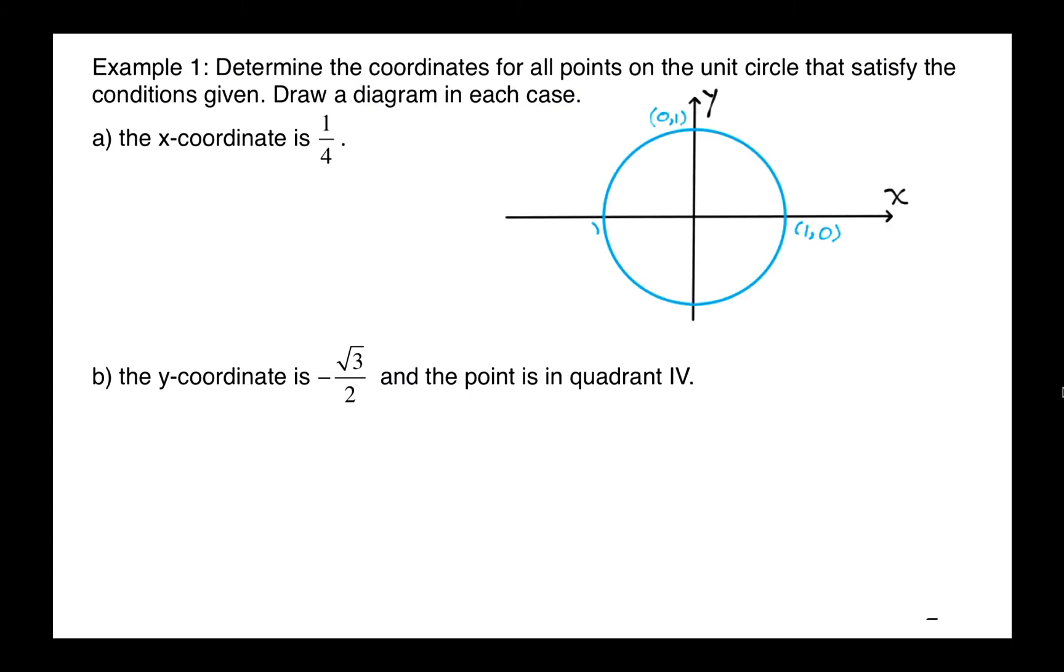If the x coordinate is a quarter, you can either have a positive or negative y value. When we substitute into the equation, squaring the 1 quarter, we get 1/16. If we subtract that from both sides of the equation, we get y squared equals 15/16. So y will either be plus or minus the square root of 15 over 4.